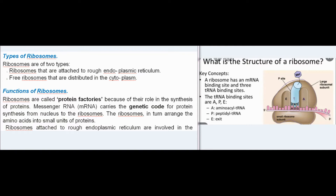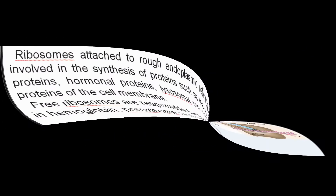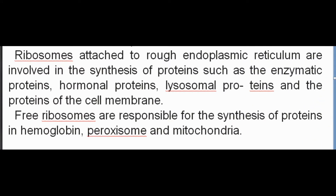Ribosomes are called protein factories because of their role in protein synthesis. Messenger RNA (mRNA) carries the genetic code for protein synthesis from the nucleus to the ribosomes. The ribosomes arrange amino acids into small units of proteins. Ribosomes attached to rough endoplasmic reticulum synthesize enzymatic proteins, hormonal proteins, lysosomal proteins, and proteins of the cell membrane. Free ribosomes are responsible for synthesis of proteins in hemoglobin, peroxisomes, and mitochondria.